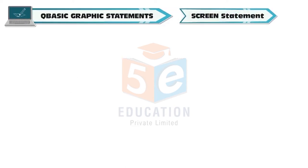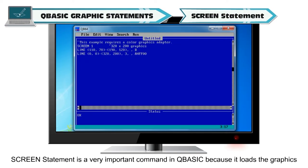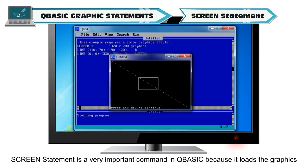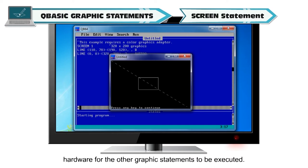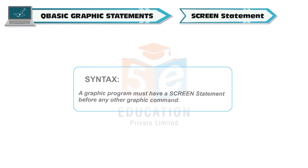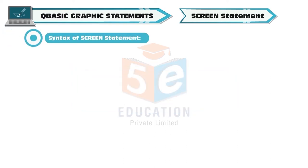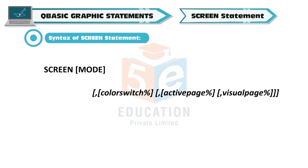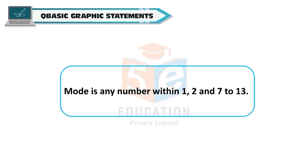Screen statement is a very important command in QBasic because it loads the graphics hardware for the other graphic statements to be executed. A graphic program must have a screen statement before any other graphic command. The syntax of the screen statement is: SCREEN Mode, where Mode is any number within 1, 2 and 7 to 13.